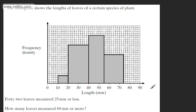In this video, we're going to do a GCSE question looking at histograms. We're told the histogram shows the lengths of leaves of a certain species of plant. Often in the exam, this will be on centimeter square paper. As we've not got that, I'm going to use the method of counting squares.